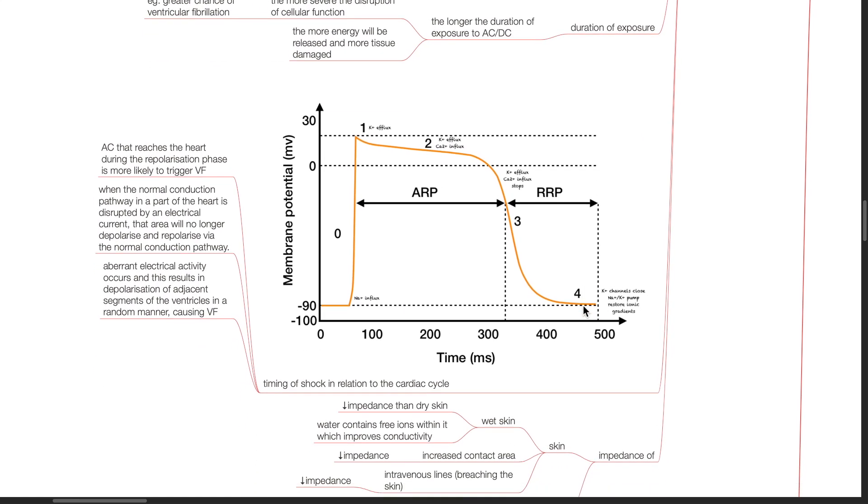Timing of shock in relation to the cardiac cycle. AC that reaches the heart during the repolarization phase is more likely to trigger VF. When the normal conduction pathway in a part of the heart is disrupted by an electrical current, that area will no longer depolarize and repolarize via the normal conduction pathway. Aberrant electrical activity occurs and this results in depolarization of adjacent segments of the ventricles in a random manner causing VF.